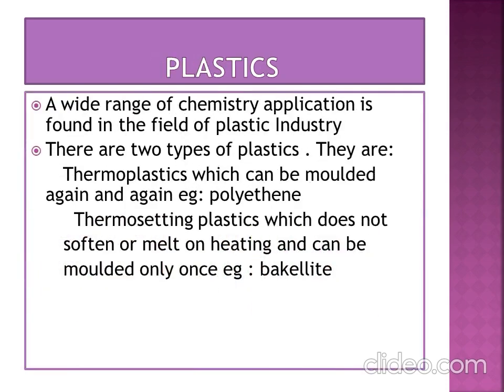Plastics: A wide range of chemistry applications is found in the field of the plastic industry. There are two types of plastics. Thermoplastics, which can be molded again and again — for example, polyethene. Thermosetting plastics, which do not soften or melt on heating and can be molded only once — for example, Bakelite.